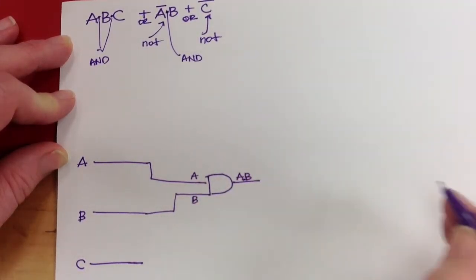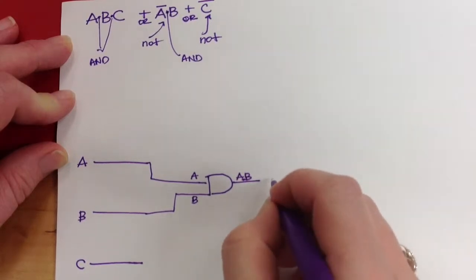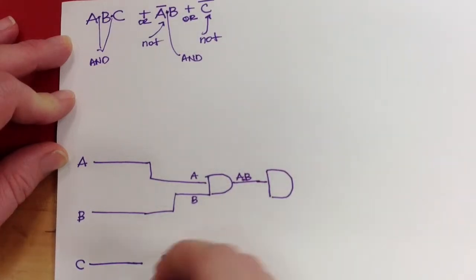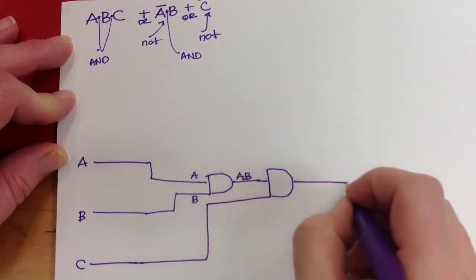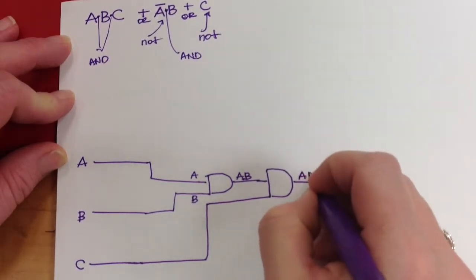Now I need to join C with that. So that's A and B, and if I combine a C, I've made A and B and C.